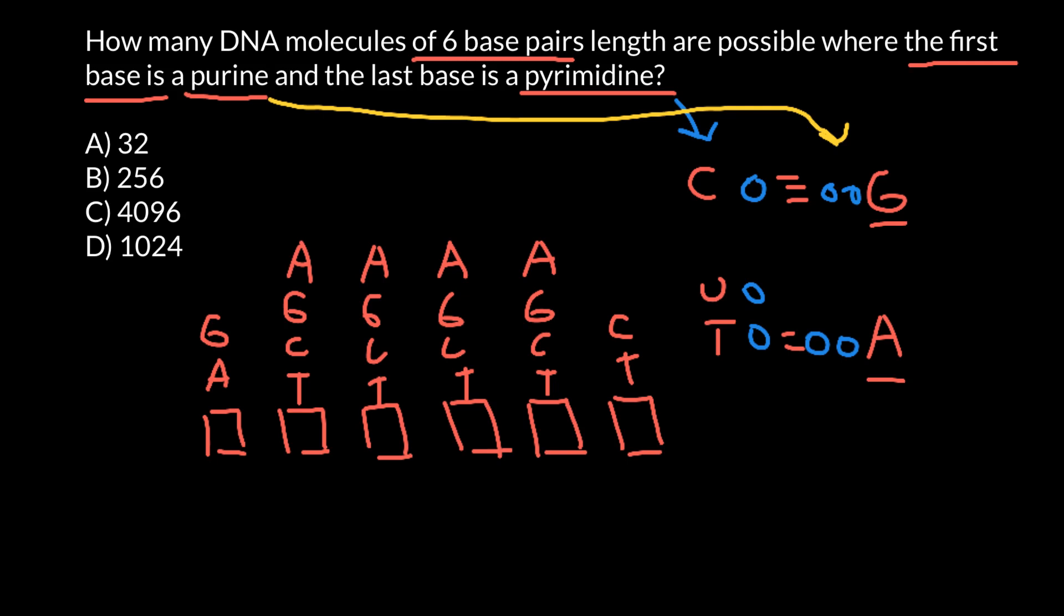So for the first position, we have two variants. For the second, we have four variants of the bases. For the third also, four variants of the bases to choose from. For the fourth position. And for the fifth position, we also have four variants. And for the last position, we have two variants here.